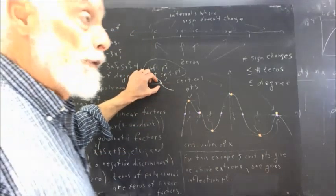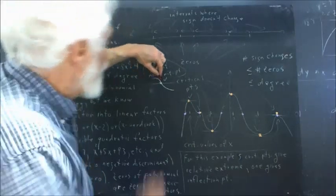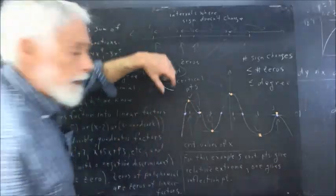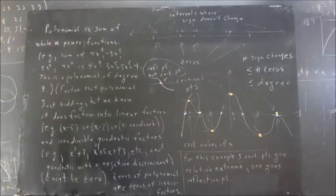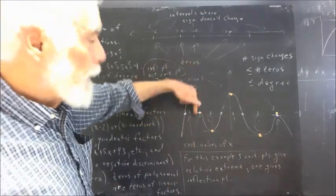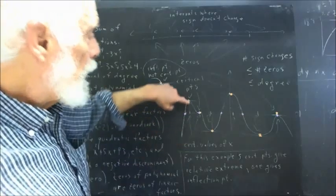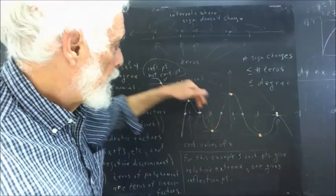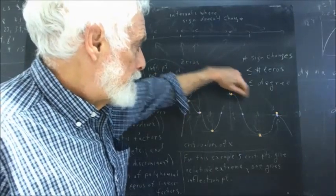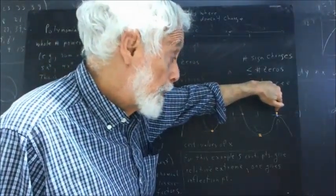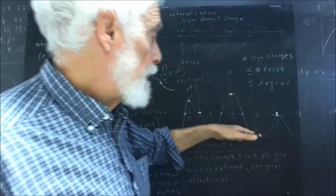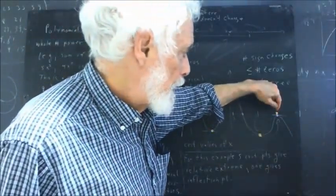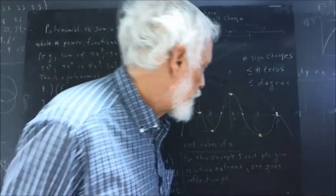At a zero that is an inflection point but not a critical point, the graph would be locally linear near that point — it looks like a straight line very close to it. At the particular zero we've been examining, we have both a critical point (the graph levels off) and an inflection point (the concavity changes). Those two things together mean we do go through the axis. We also have another zero that is a critical point where the concavity is always negative, so that critical point is a relative maximum and the function behaves accordingly.